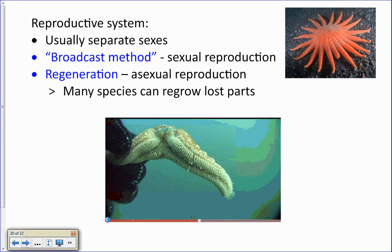They can also perform a form of asexual reproduction called regeneration, where animals can regrow lost body parts. If a starfish loses an arm, it can regrow that arm. In fact, in some types of starfish, if part of the central disc is attached to the arm when it's lost, that arm can actually grow into a whole new animal.